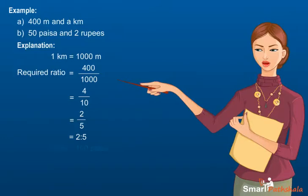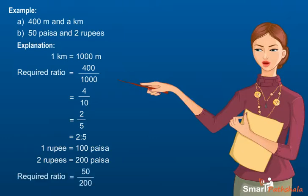One rupee is equal to 100 paisa, so 2 rupees is equal to 200 paisa. The required ratio is 50 upon 200 which is equal to 1 is to 4.